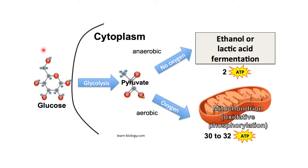Glucose is the main component in respiration. By glycolysis, glucose is converted to pyruvate. Then, in the presence of oxygen, it goes to the mitochondria for oxidative phosphorylation and energy is liberated — that is the aerobic respiration pathway. In anaerobic respiration, where no oxygen is required, it enters the fermentation stage.